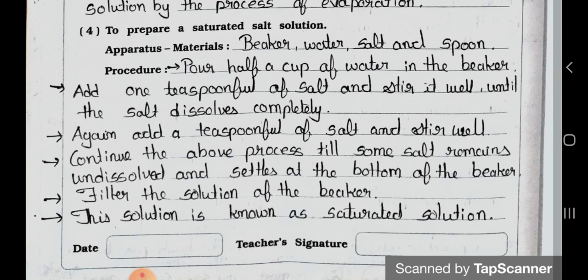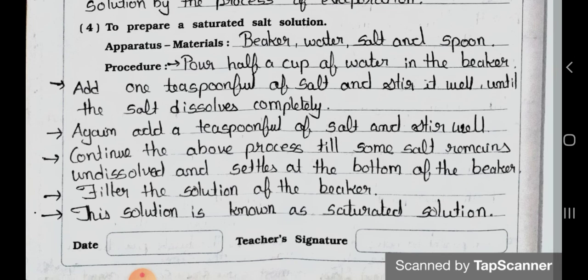Add 1 teaspoonful of salt and stir it well until the salt dissolves completely. Again add a teaspoonful of salt and stir well. Continue the above process till some salt remains undissolved and settles at the bottom of the beaker. Filter the solution from the beaker. This solution is known as the saturated solution.